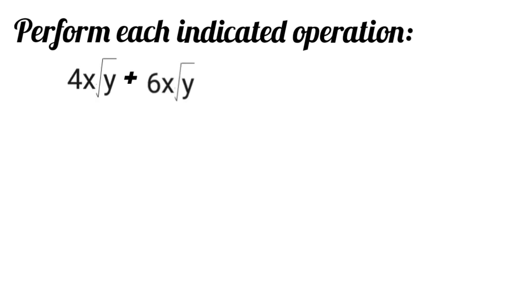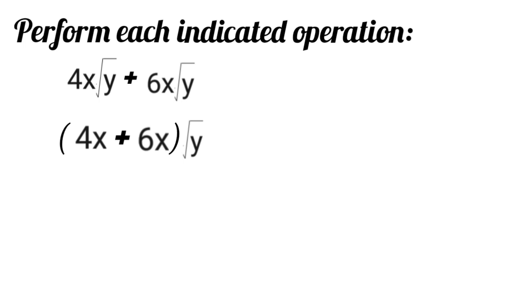For example, perform each indicated operation. Number 1: we have 4x square root of y plus 6x square root of y. What we're going to do is add the two radicals — they have the same index, which is 2. So just add 4x plus 6x, since they have the same variable coefficient, and then write square root of y, because they have the same index 2 and the same radicand y. 4x plus 6x equals 10x, so the answer is 10x square root of y.